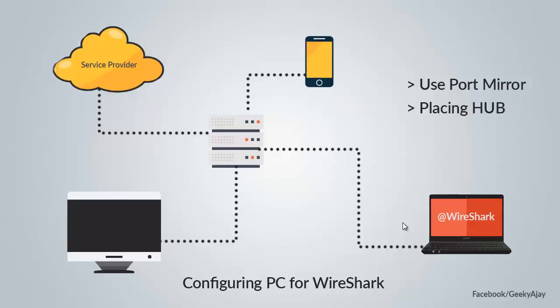The second thing: make sure your PC, laptop, or desktop is connected to the network and the correct segment. The third thing: make sure the network can send you traffic. If your network cannot send traffic, your Wireshark software will not capture any network traffic.